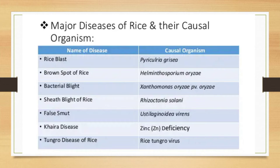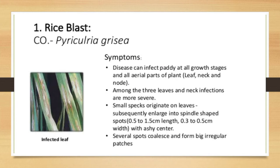Today we are going to see rice blast and brown spot of rice. Rice blast is caused by Pyricularia oryzae, and brown spot of rice is caused by Helminthosporium oryzae. First, rice blast — causal organism Pyricularia oryzae — and its symptoms.